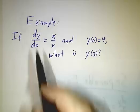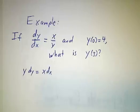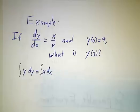So this is separable. It's a function of x divided by a function of y. So we do our cross multiplication, and we get y dy equals x dx. Then we integrate both sides.